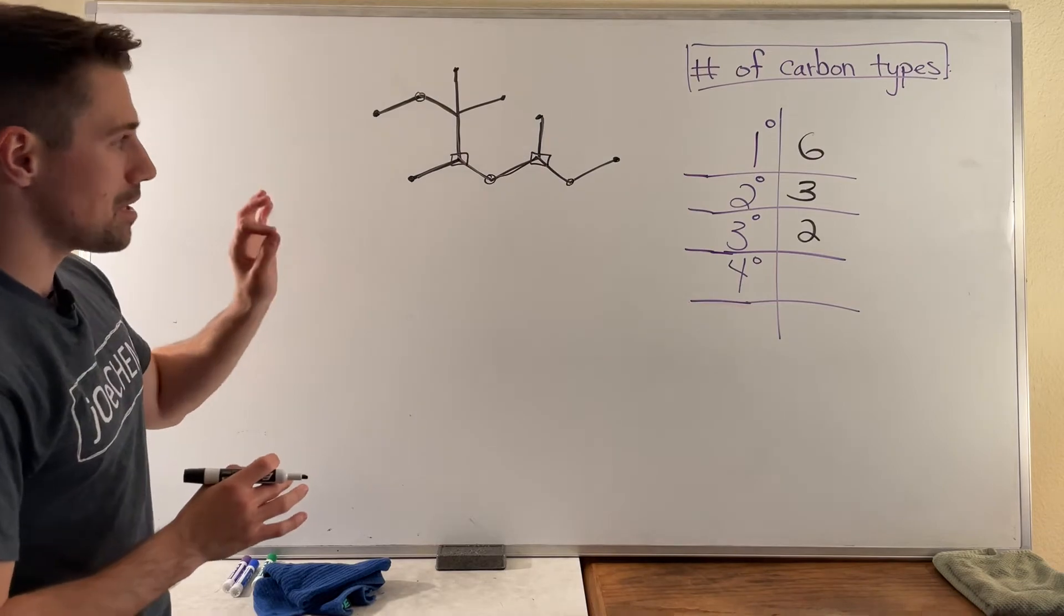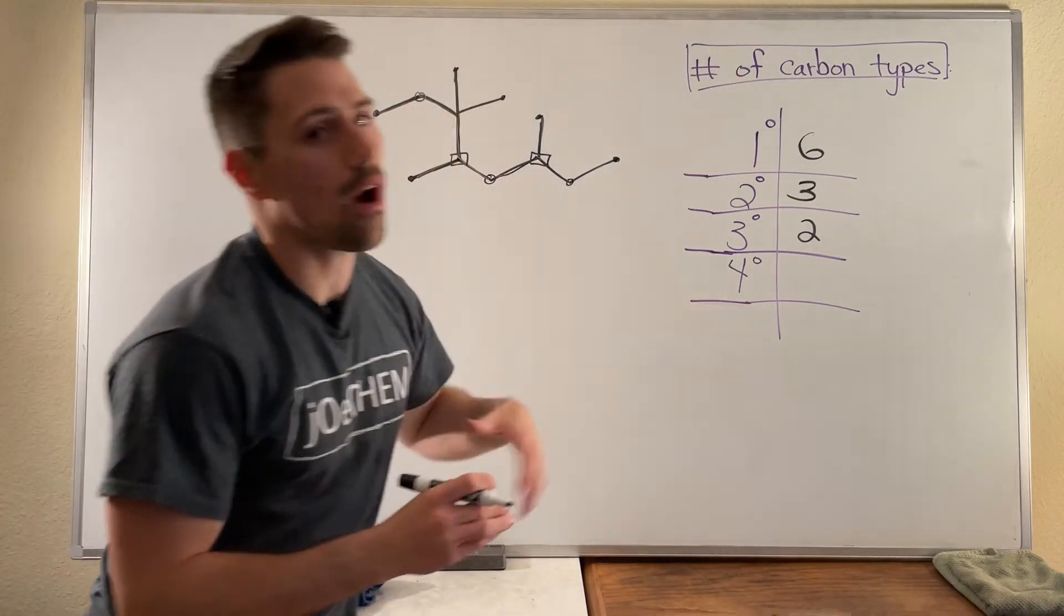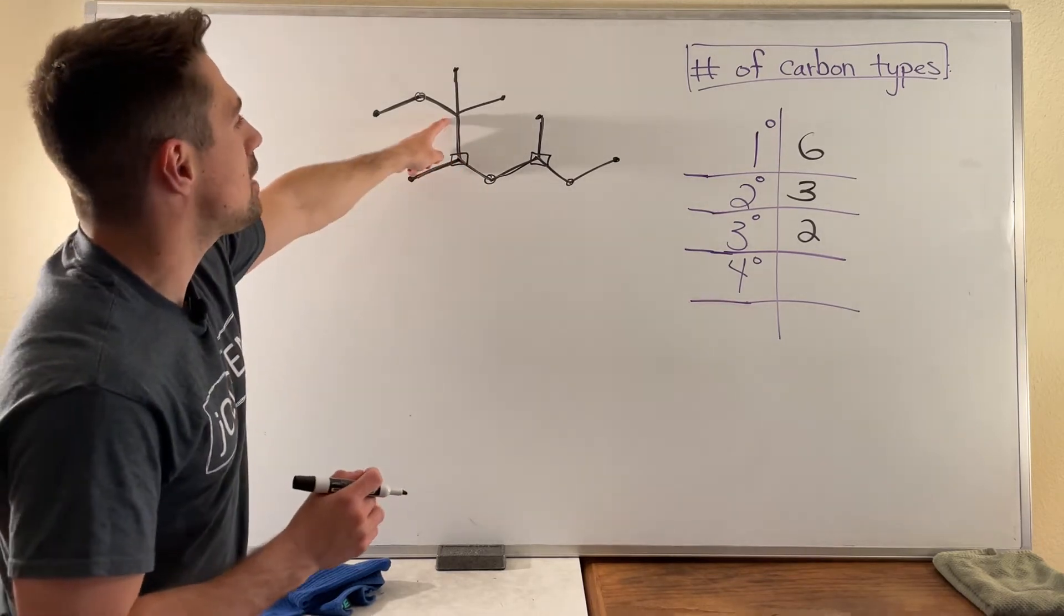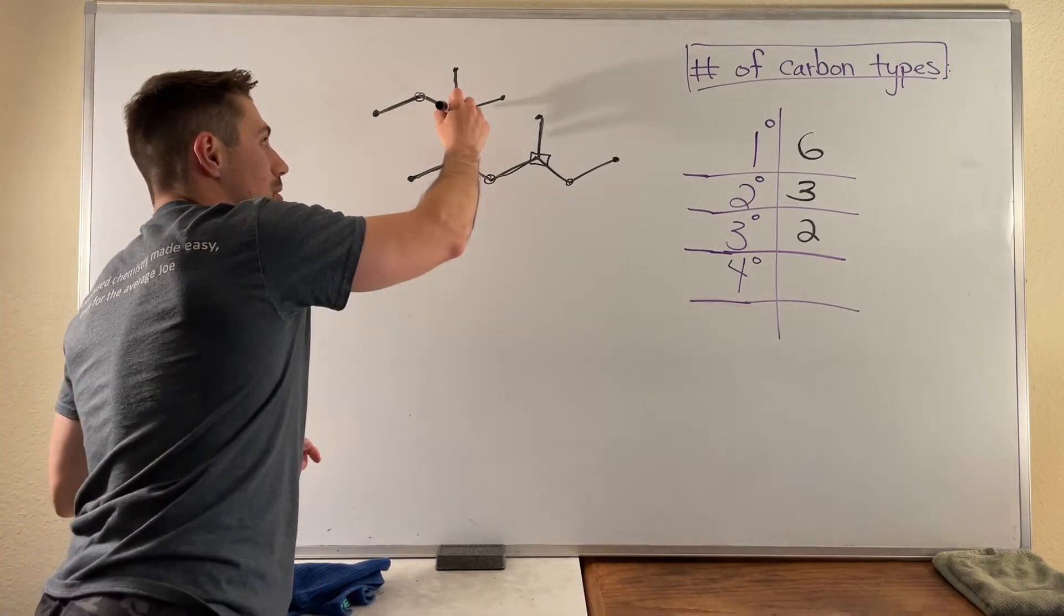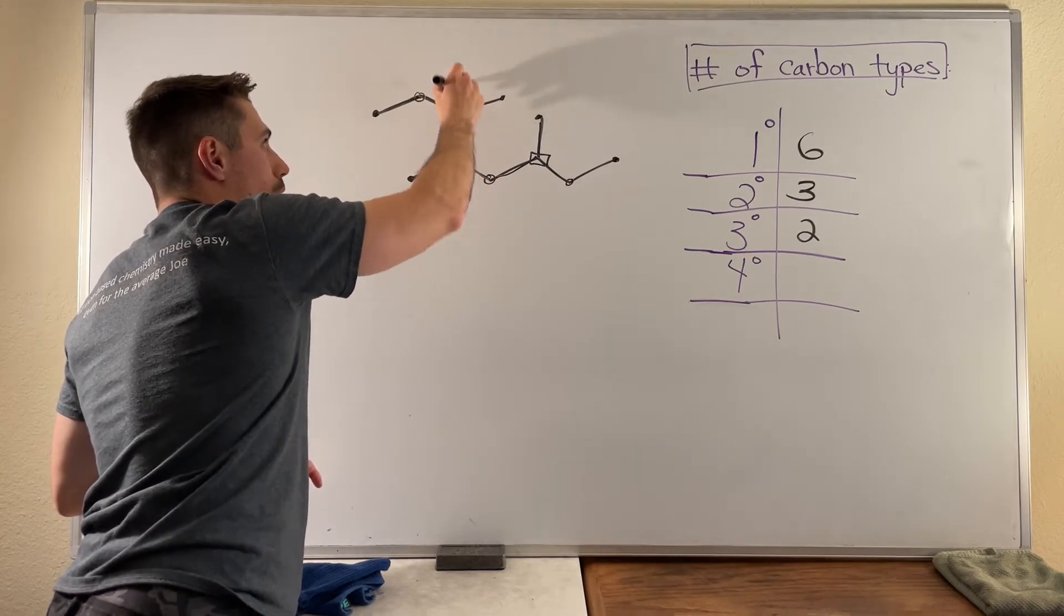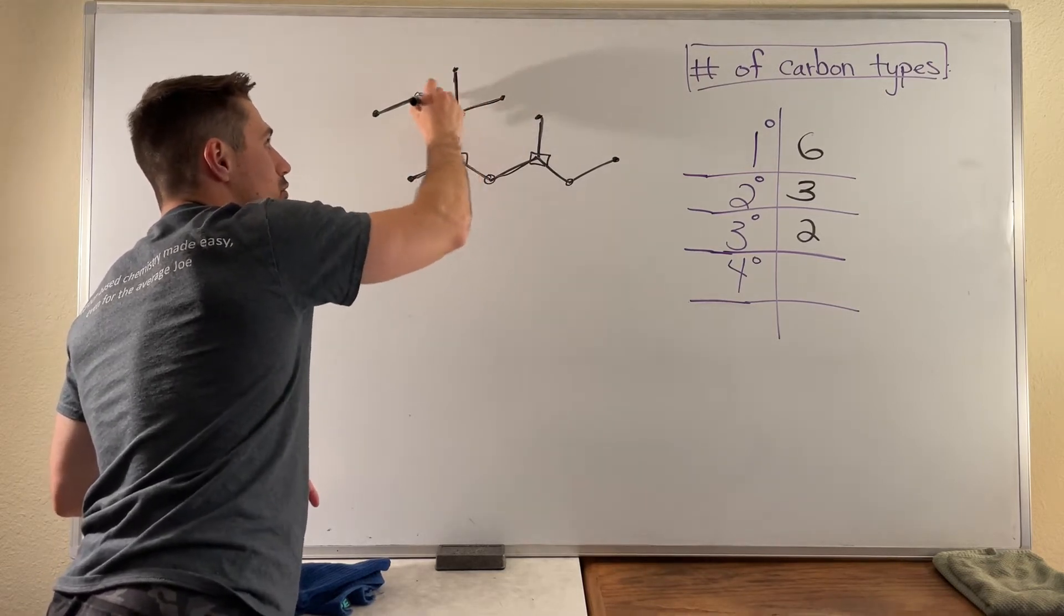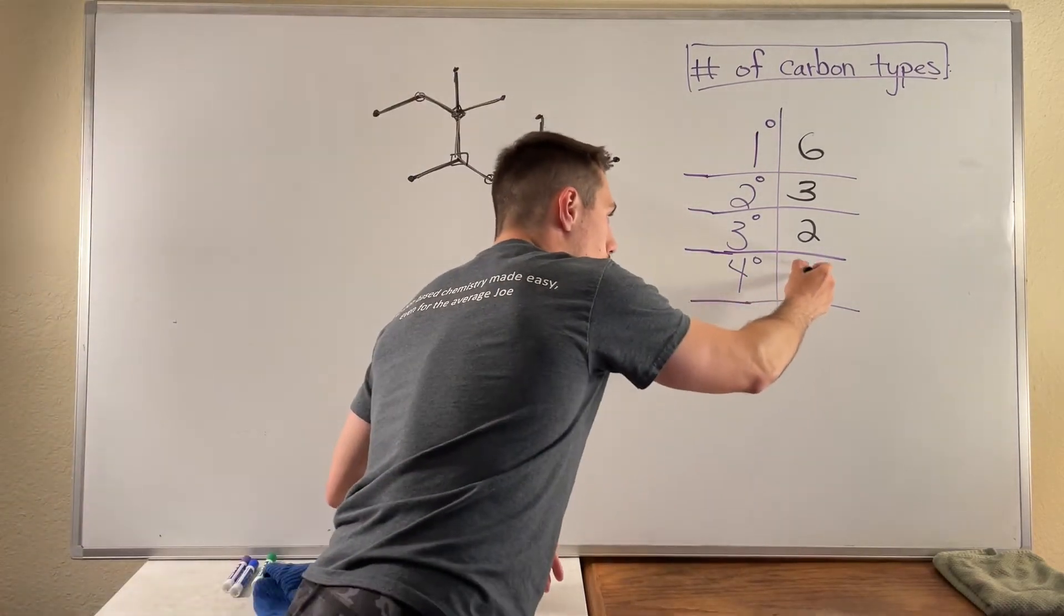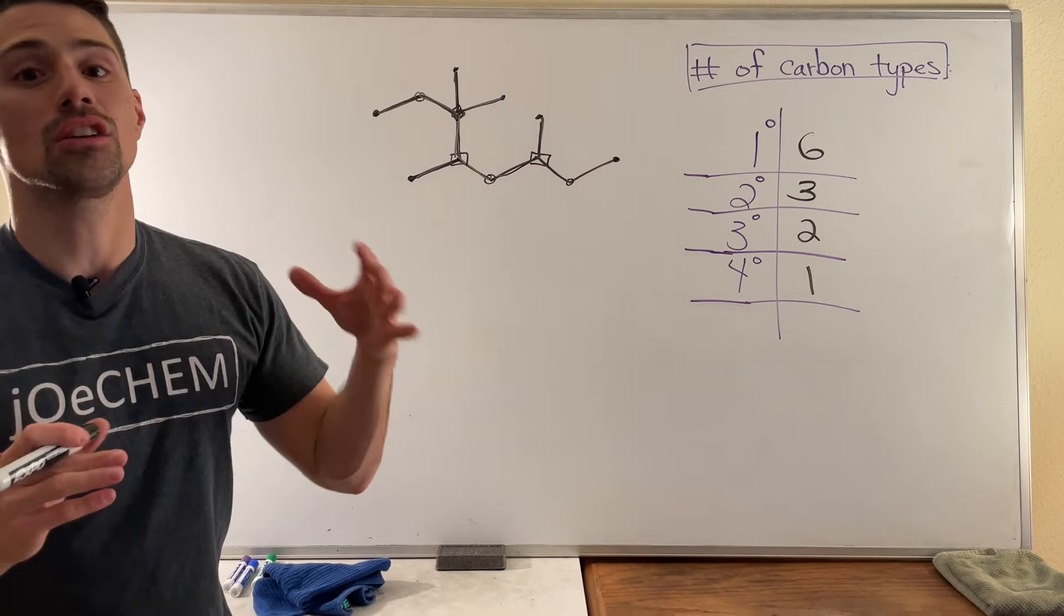And then last but not least, how many quaternary carbons do we have? Well, we've actually labeled all of the other carbons, but if you take a look up here, this carbon right here, which I'll put in a diamond, one, two, three, four carbons that it itself is attached to. So we only have one quaternary carbon here.